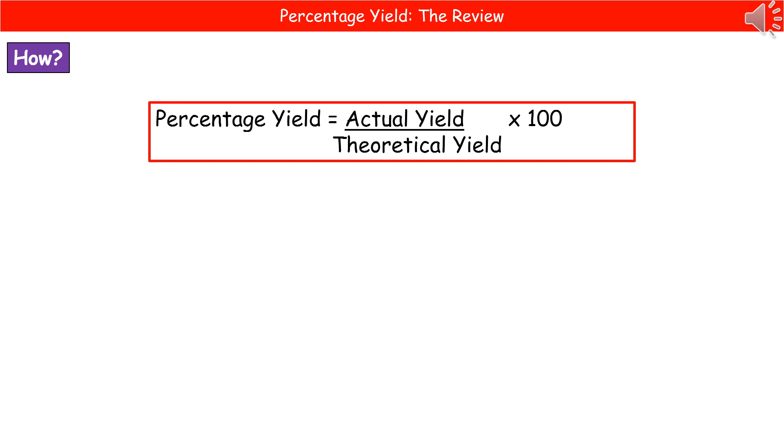Welcome to our review on percentage yield. The first thing we really need to know is the actual formula for calculating percentage yield. They're not going to give you this on the exam paper, so make sure that you have learnt this one. To work out the percentage yield, you do the actual yield, which they will give you in the question, divided by the theoretical yield, and then we times that answer by 100 because it is a percentage.